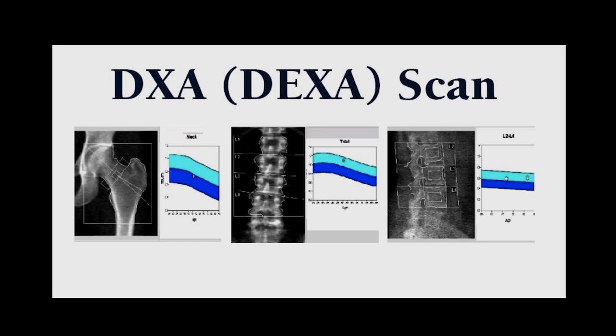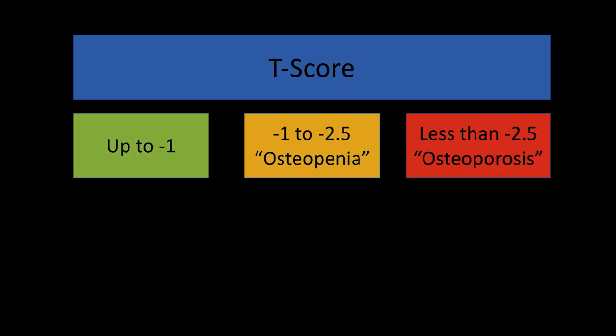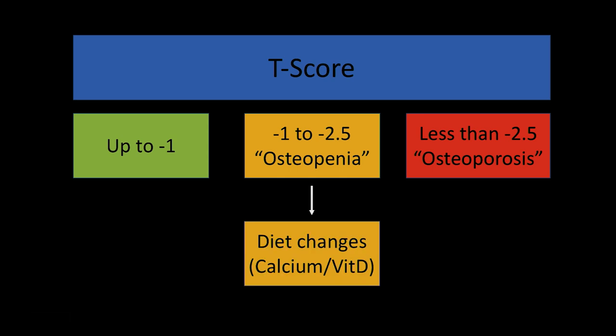Osteoporosis is diagnosed with a DEXA scan, which gives you a T score. It falls into three categories: a score from positive down to negative 1.0 is considered normal; between negative 1.0 and negative 2.5 is osteopenia; and osteoporosis is when the T score is less than negative 2.5. The more negative you get, the more brittle your bones are. Treatment recommendations for osteopenia are diet changes, calcium, and vitamin D. Pharmacologic treatment is indicated for patients with osteoporosis.